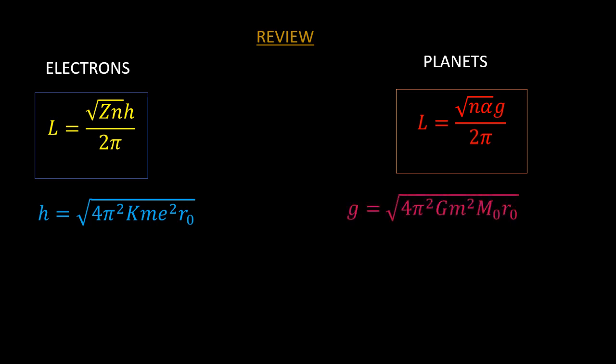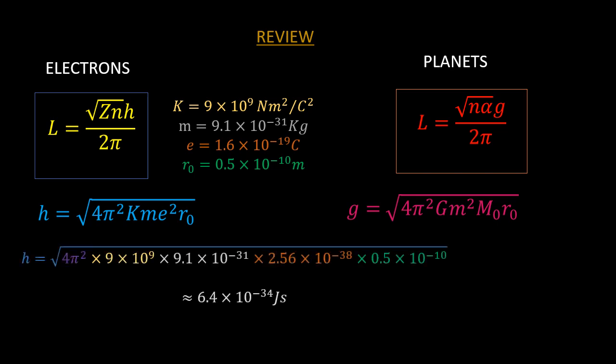Using the values of the constants that make up the square root sign for H, which includes the electrostatic constant, the mass and charge of an electron, and the Bohr radius, we establish that H is the Planck's constant, ascertaining the validity of the method used.